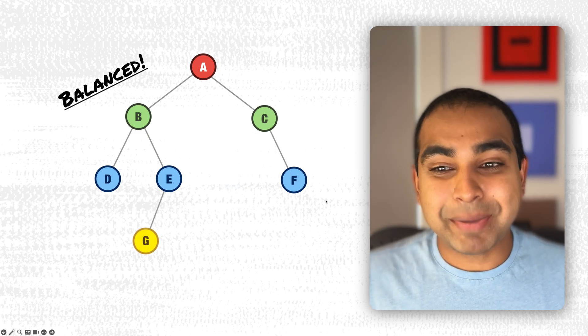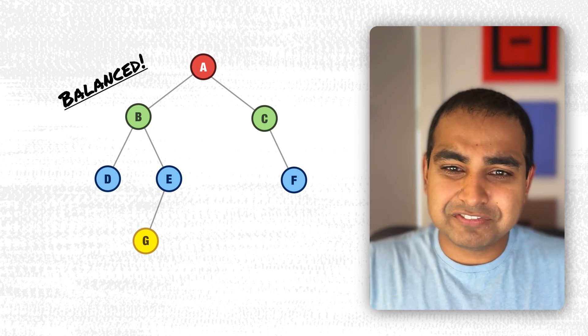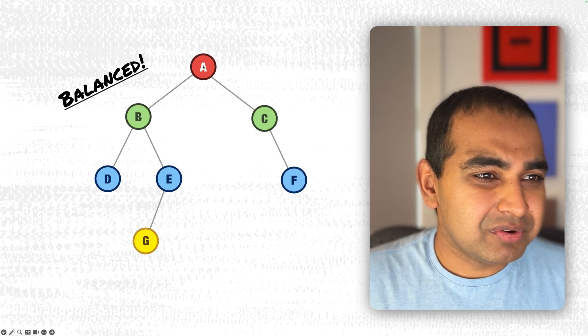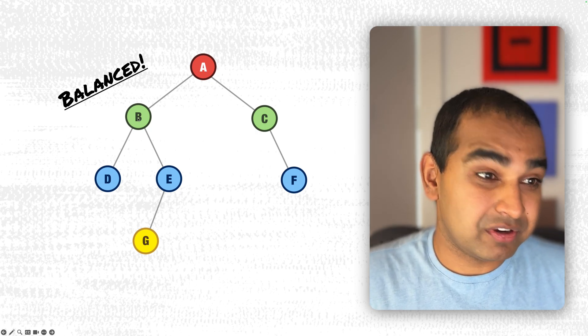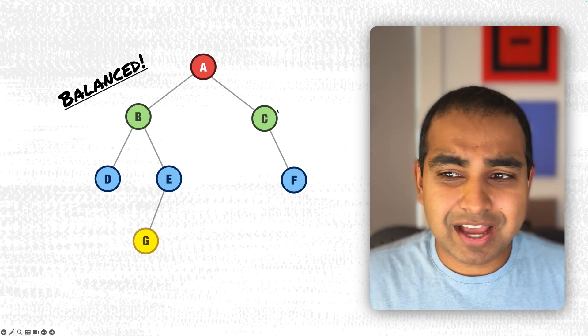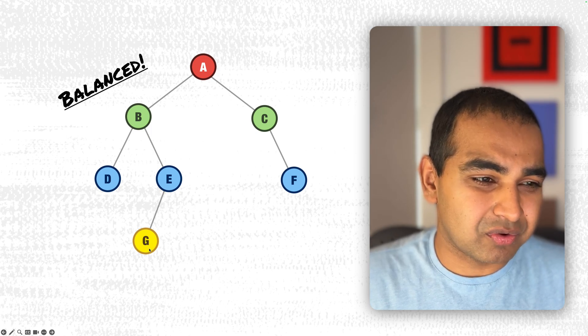The next one is a balanced binary tree. A balanced binary tree is one where the height of the left and right subtree of each node is not more than one apart. Here's an example. Notice that if you go to A, you have a left subtree starting with B and the left subtree starting with C. You can see that the height difference between them is not more than one apart. G is the only one out here, apart by one.